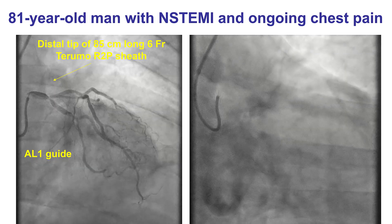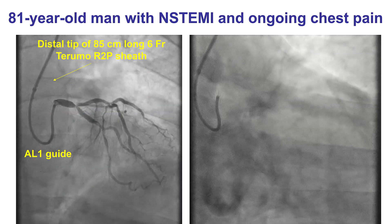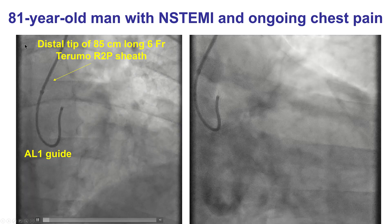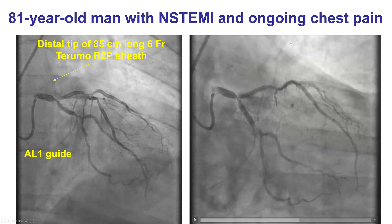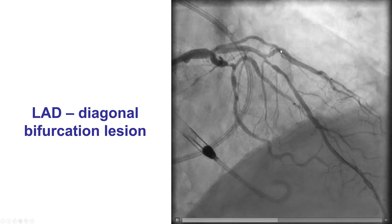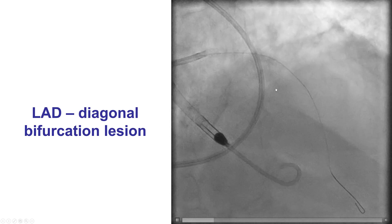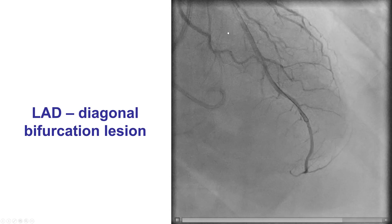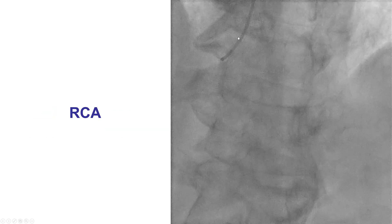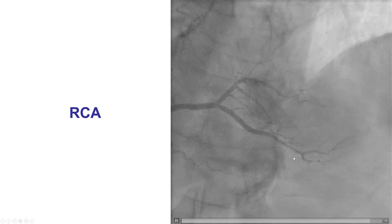The patient was an elderly gentleman who presented with non-ST elevation myocardial infarction and ongoing chest discomfort. Diagnostic angiography was done using right radial access and was actually fairly challenging, requiring use of a long 85 cm, 6 French R2P sheath. That demonstrated significant coronary disease with a significant distal left main, a bifurcation of the circumflex, and also disease in the left anterior descending artery with an LAD-diagonal bifurcation. It was unclear which was the culprit lesion as all three lesions appeared to be significant and potentially ulcerated. The right coronary artery did not have any significant stenosis.